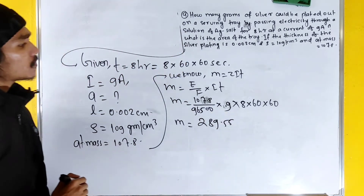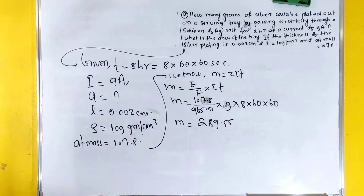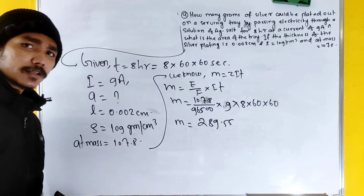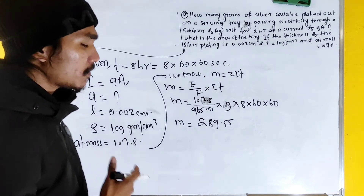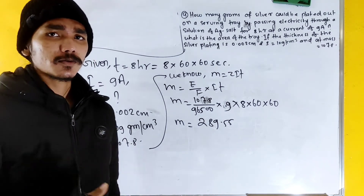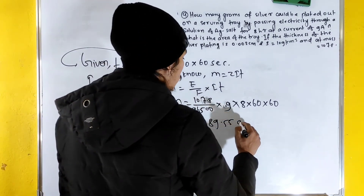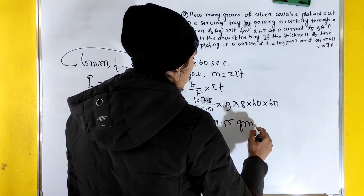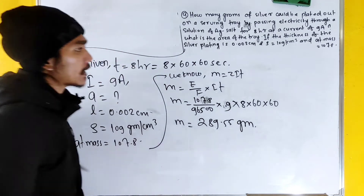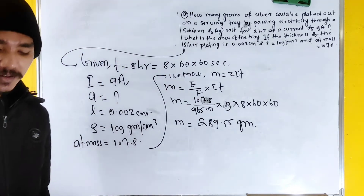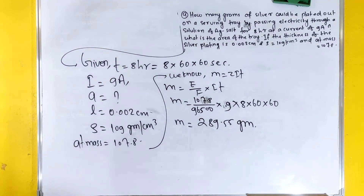The unit is grams — in CGS units, the mass will be in grams.